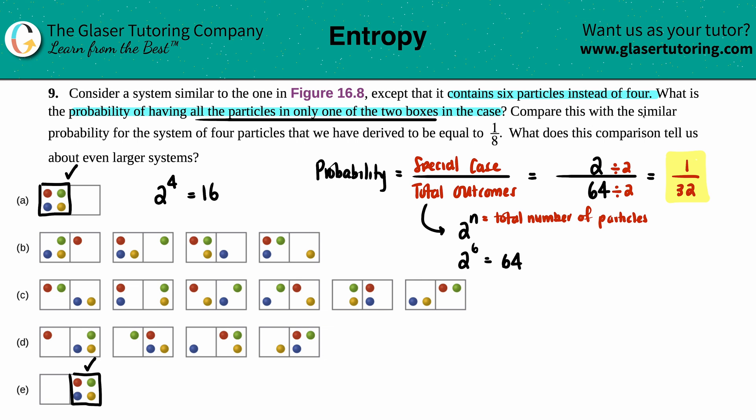Now it says compare this with the similar probability for the system of four particles that we derived to be equal to 1/8. What does this comparison tell us about even larger systems? So basically, with four particles we have a 1 in 8 shot that that's going to happen. In six particles, we have a 1 in 32 chance of the same thing happening. And if we compare these values, 1/8 versus 1/32, 1/8 is much larger than 1/32.